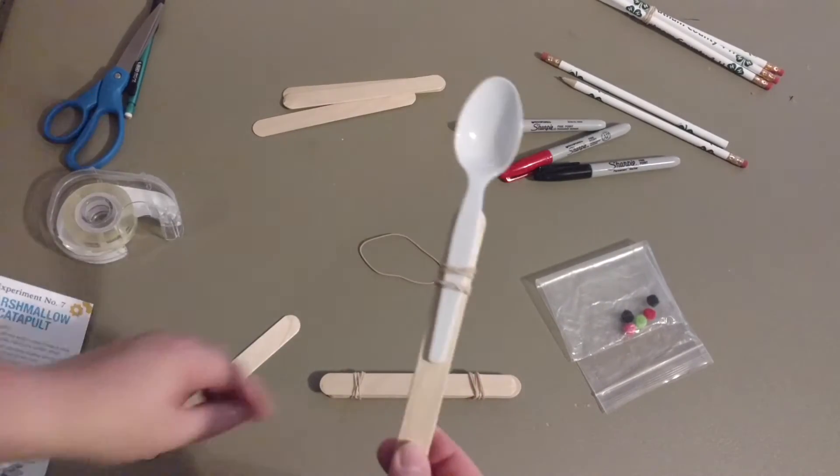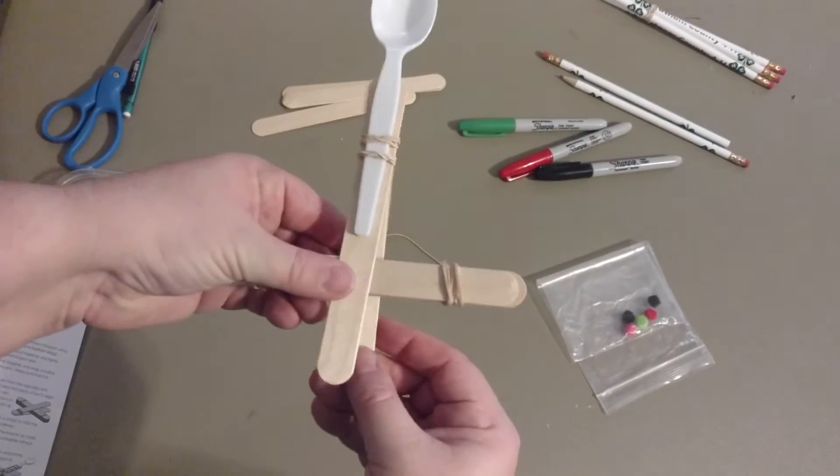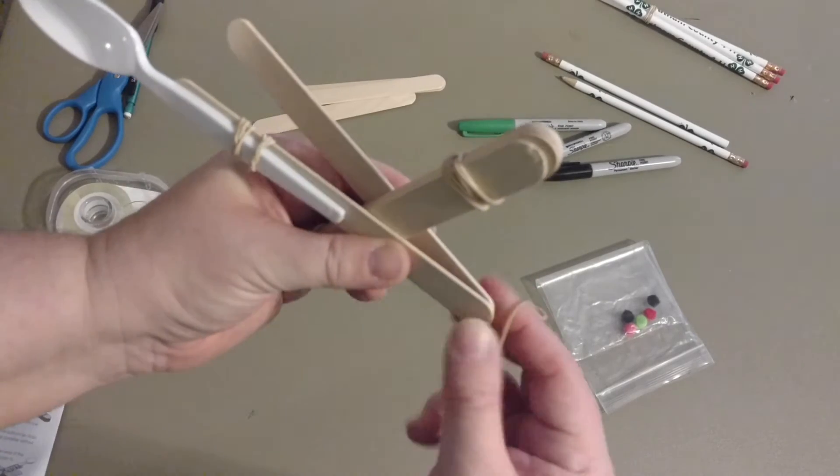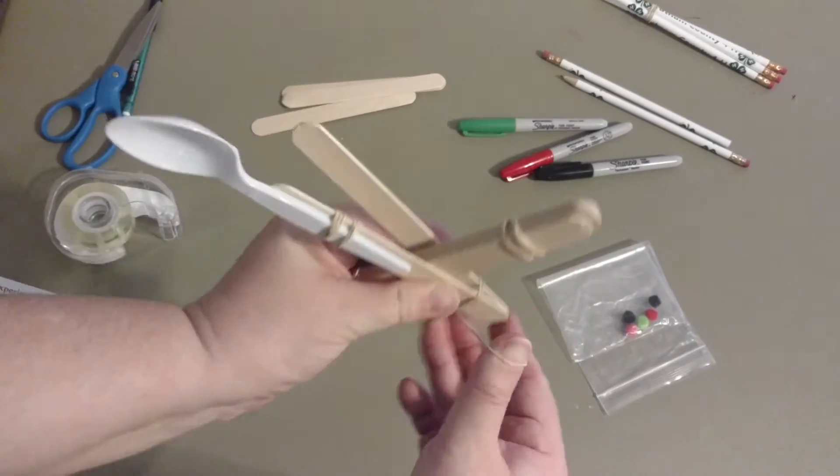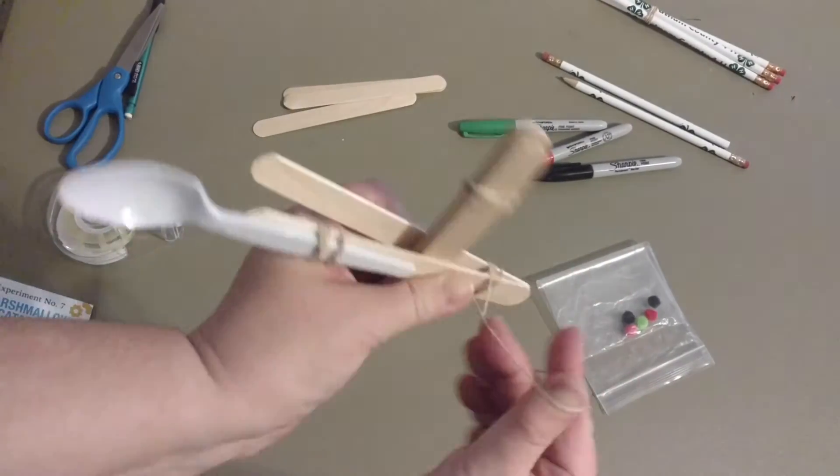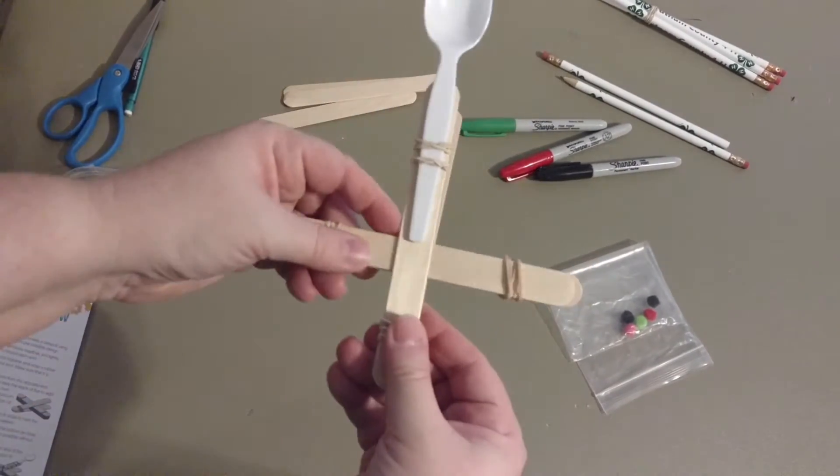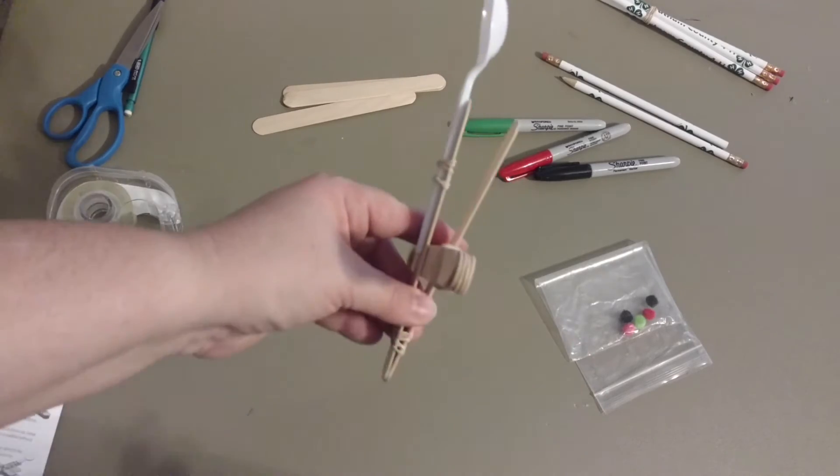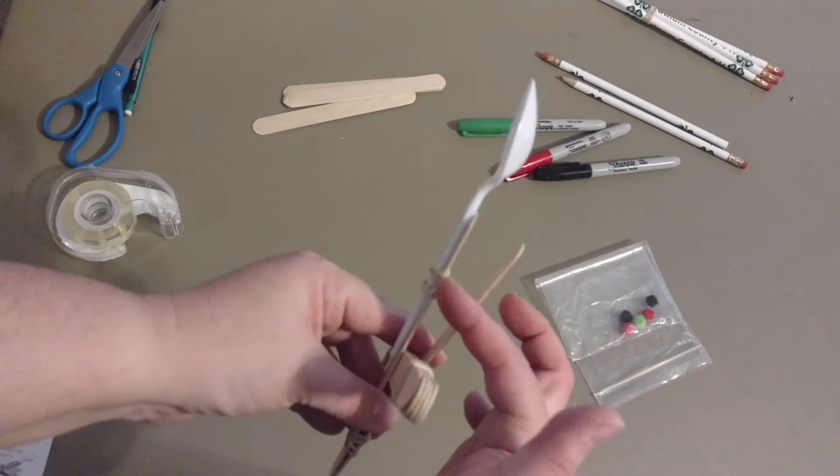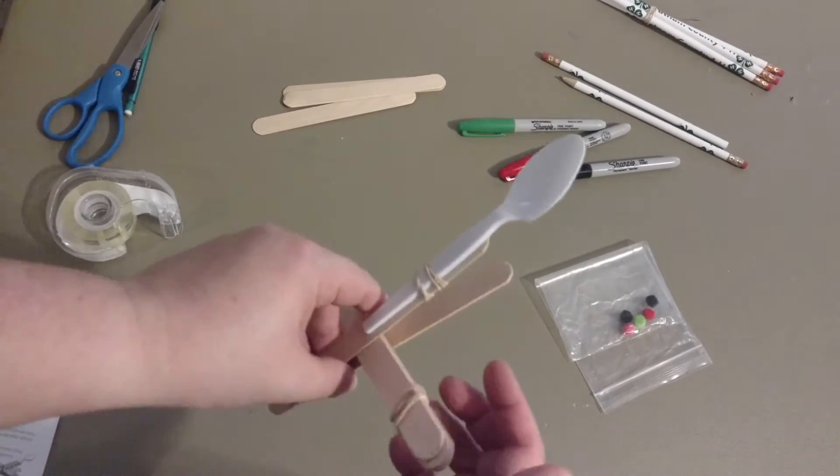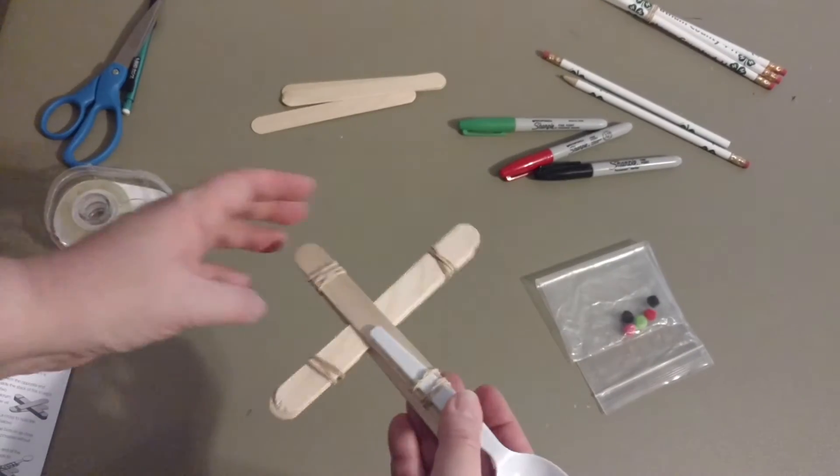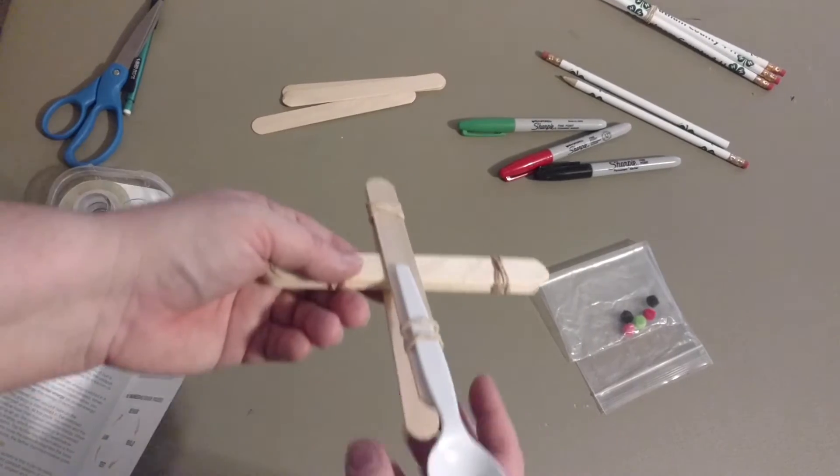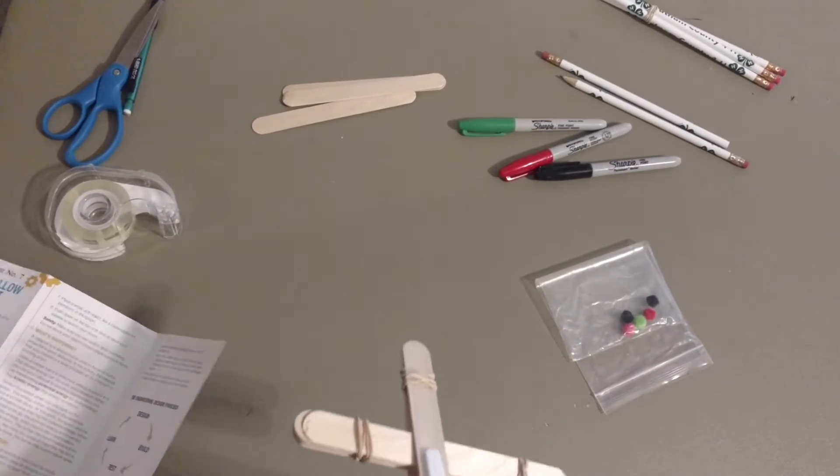I'm going to take the spoon and put it on top, and I'm going to take another popsicle stick and hook those together right there with an additional rubber band. Make sure that's good and tight. So we have something that looks like this. The big stack of popsicle sticks are going to make a split and make that look like a V shape, and then your spoon is going to be on top. Make sure that the open end of your spoon is at the top, or else you're not going to have a good launch.